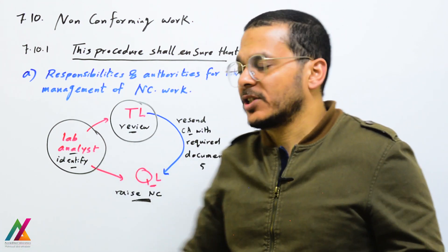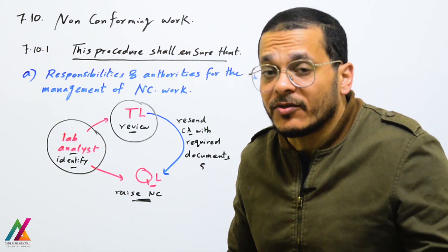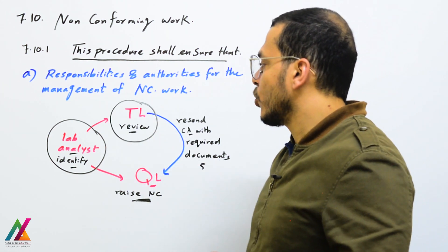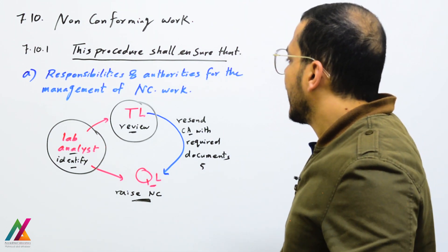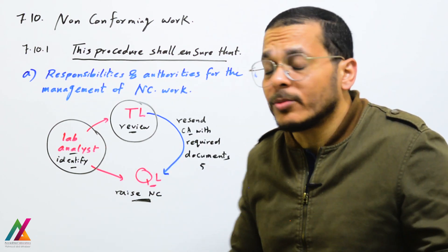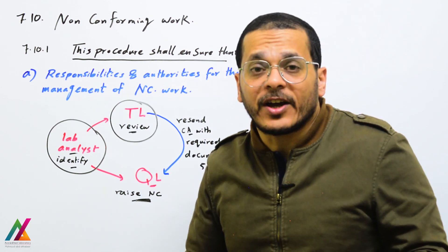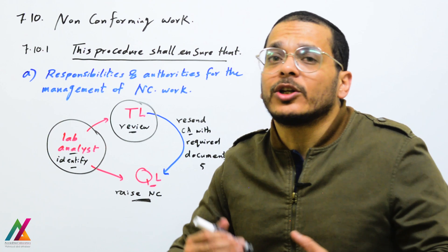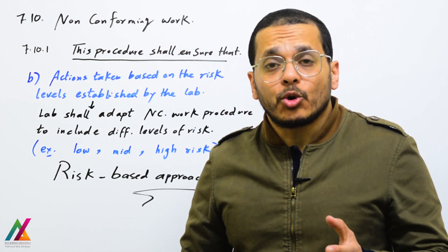This process shall ensure, first, the responsibilities and authorities for management of non-conforming work. It is very important to know who is responsible for what. The lab analyst can identify non-conforming work; the quality lead can identify it through internal audit; the accreditation body through external audit; and the technical lead can also identify it. The technical lead then sends it to the quality lead, who raises the non-conformity and tracks progress up to closure.